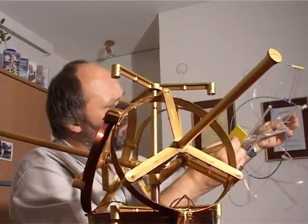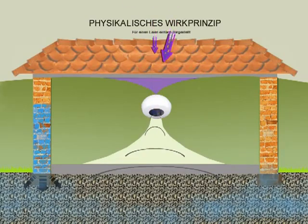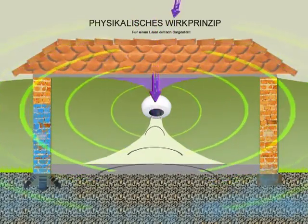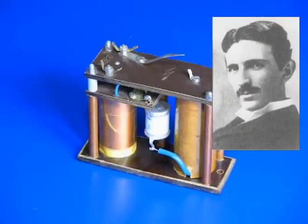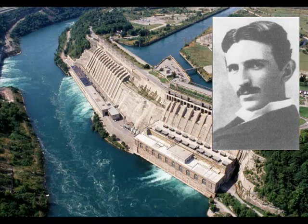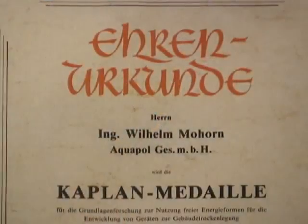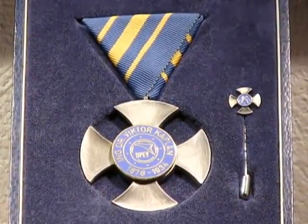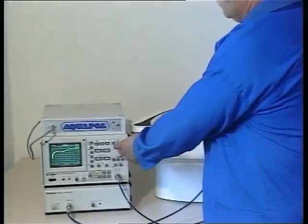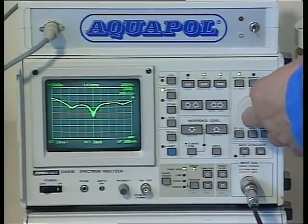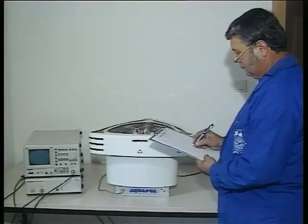According to the hypothesis of the inventor and patent holder, Mr. William Mohorn, the futuristic internal structure of the Aquapol system is a novel generator with an innovative mode of energy supply. Its components are reminiscent of those of the long-forgotten but ingenious inventor Nikola Tesla, who laid the foundation for the worldwide introduction of three-phase alternating current. For his basic functional research and successful implementation of these principles to dry out walls, Mr. Mohorn was awarded the Kaplan Medaglia — the highest award for researchers and inventors in Austria. The Aquapol company also developed complex, innovative high-tech measurement procedures for production and quality control, guaranteeing high quality and 100% functionality in the long term.